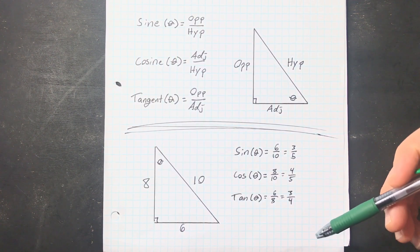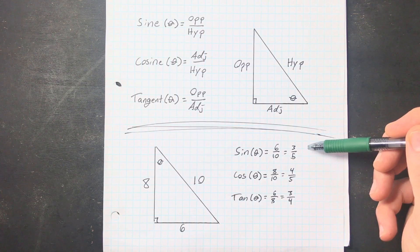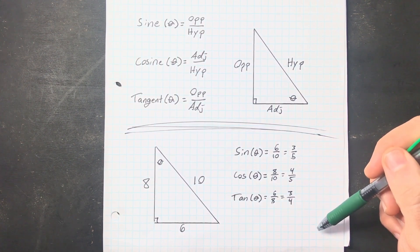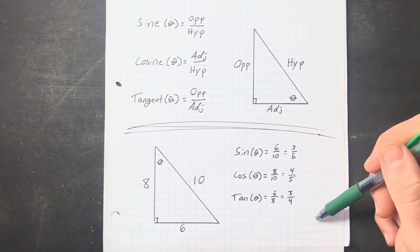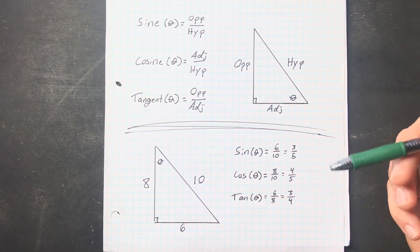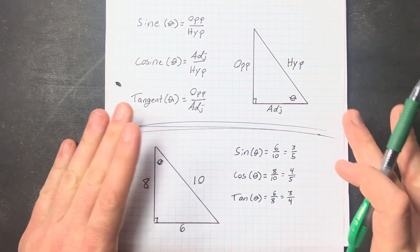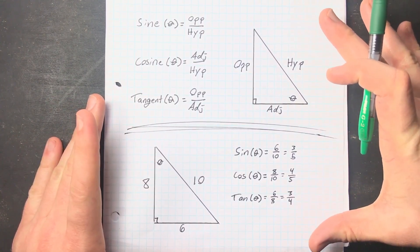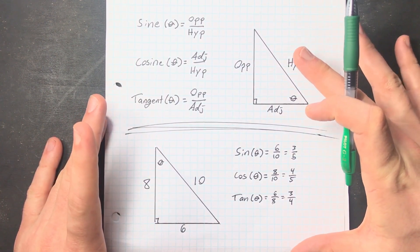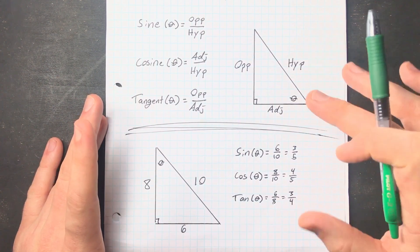Rather than just giving you the side length, they sometimes give you the sine, cosine, or tangent of an angle and expect you to be able to figure out what that means for your diagram. There's one extra thing you should be aware of — a way that they try to hide this information. So let's head into that.